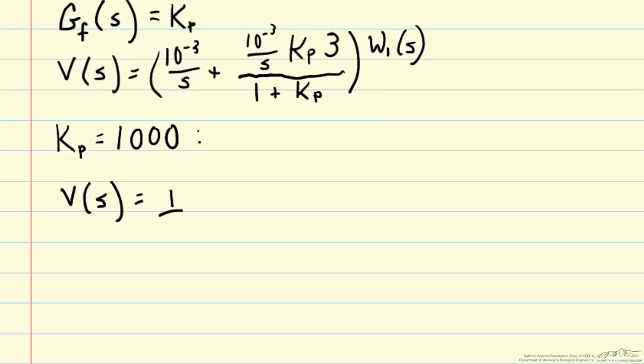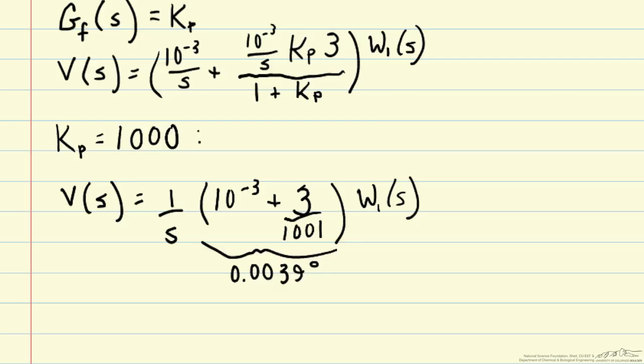So we can pull out the 1 over s, the integrator term, from both values. And then we get 10 to the minus 3 plus 3. Now our kp and our 10 to the minus 3 are going to cancel there. And then we will just divide that by 1001, 1 plus kp. And that all multiplies w1 of s. So this actually gives us a value of 0.00398.